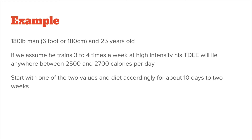Now keep in mind that this value will be a lot lower if you don't or only rarely exercise. A 180 pound, 6 foot man that doesn't exercise has a TDEE of around 2000 to 2200 calories. This is almost 500 calories less per day. Getting such a difference right can make or break your diet, as you will see in the next lesson.